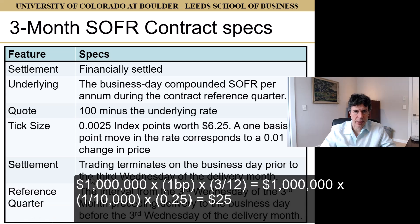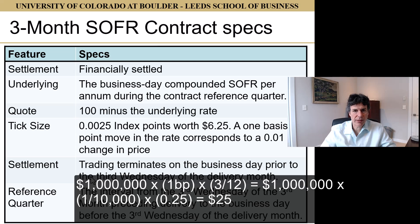Let's look at the contract spec of the three-month SOFR futures. It is financially settled, or cash settled. The underlying is the business-day compounded SOFR per annum during the contract reference quarter. The quote is 100 minus the rate. The tick size is 0.0025 index points, worth $6.25. A one basis point move in the rate corresponds to a 0.01 change in price — that's four ticks, or $25.